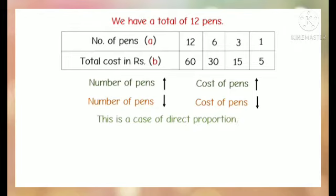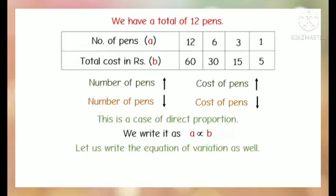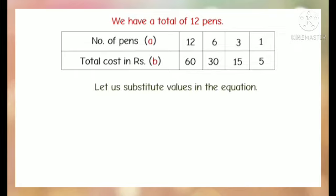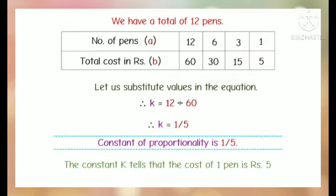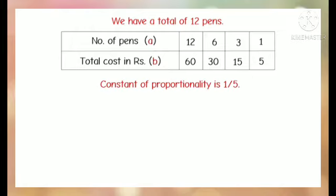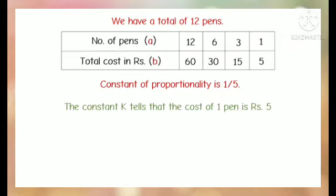This is a case of direct proportion. We write it as A is directly proportional to B. The equation of variation is A = KB, so K = A/B. Substituting values, K = 12/60 = 1/5. The constant of proportionality is 1/5. This tells us that the cost of 1 pen is Rs. 5.